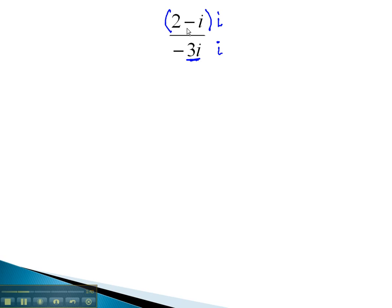Making sure we multiply the entire numerator by i, we have 2i minus i squared is negative 1. i squared, being negative 1, will change the minus into a positive 1.